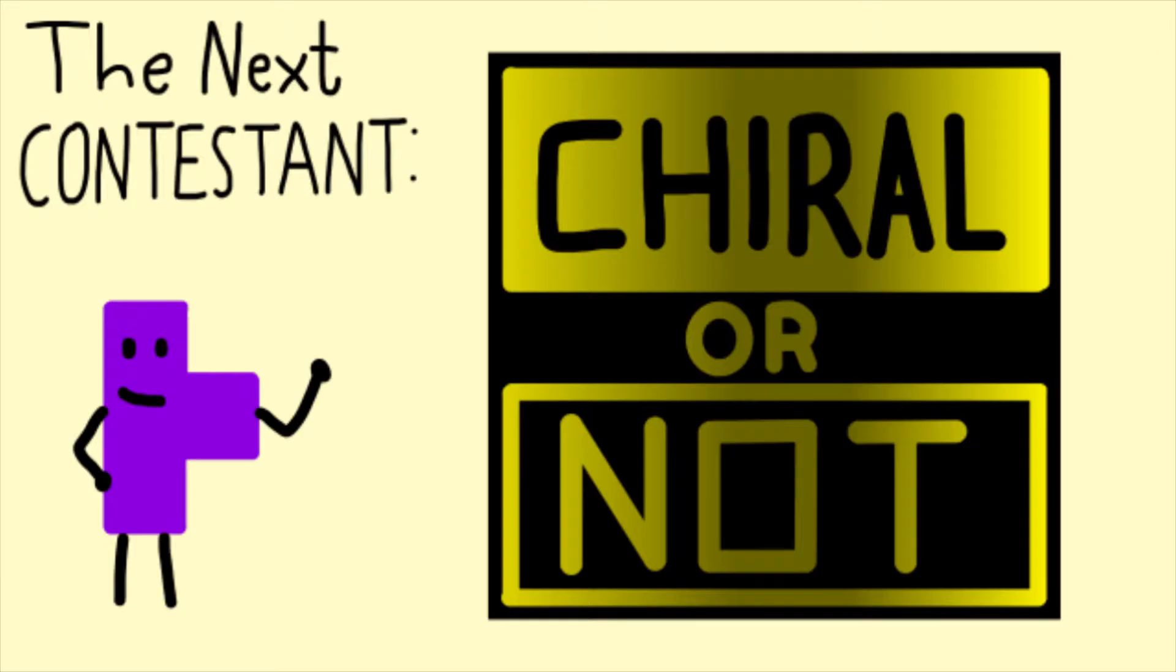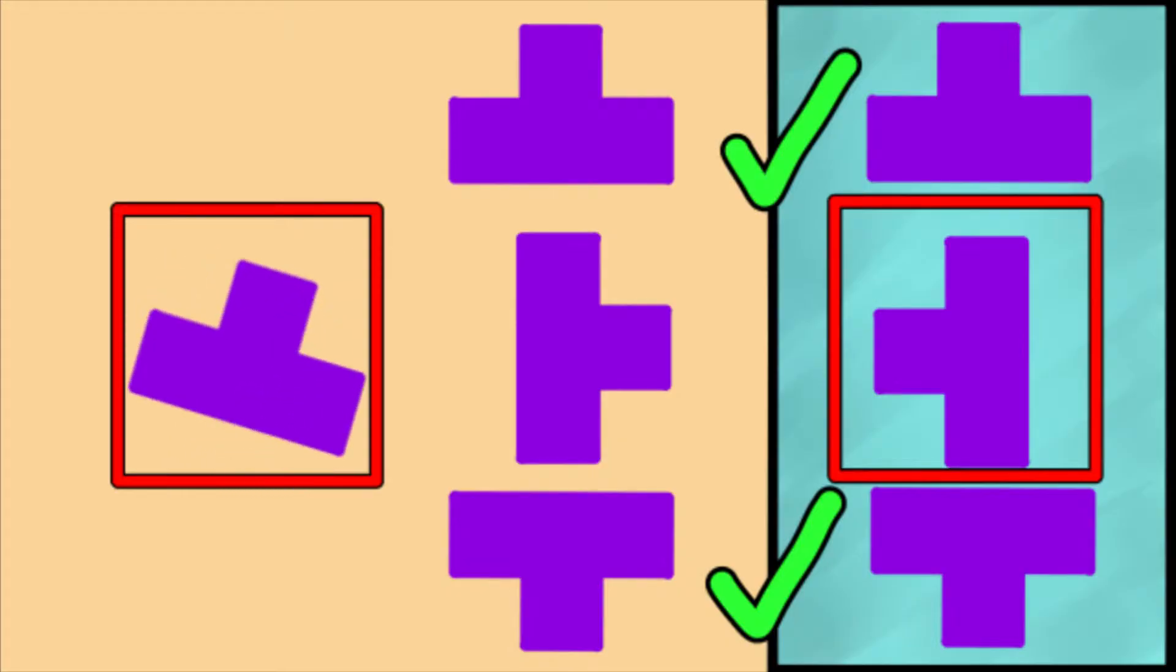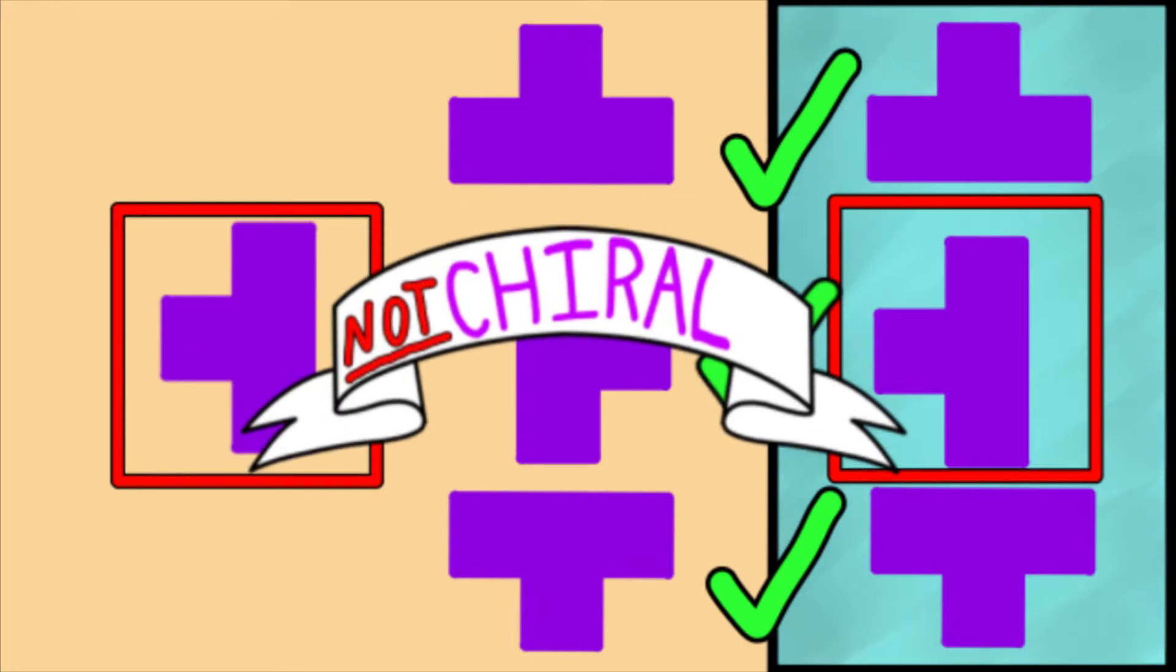Is this purple T-block chiral? Since you can in fact get the reflection by rotating the original, the T is not a chiral object.